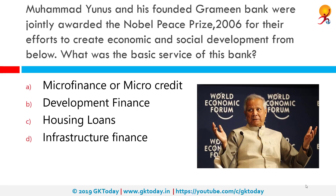Muhammad Yunus and his founded Grameen Bank were jointly awarded the Nobel Peace Prize of 2006 for their efforts to create economic and social development from below. What was the basic service of this bank? The correct answer is microfinance or microcredit. The Norwegian Nobel Committee divided the prize equally between Muhammad Yunus and Grameen Bank. They provide microfinancing so that people from the lowest economic backgrounds can have access to money to better their lives.